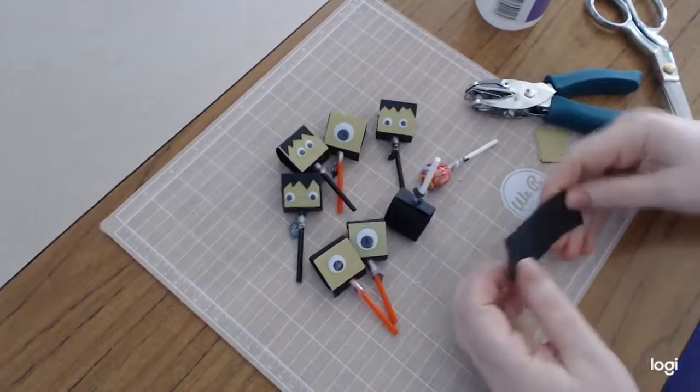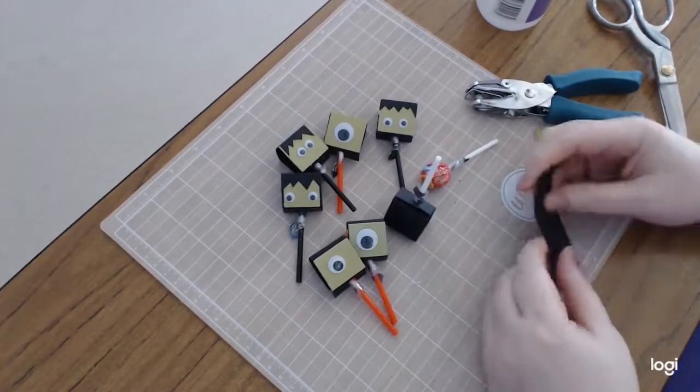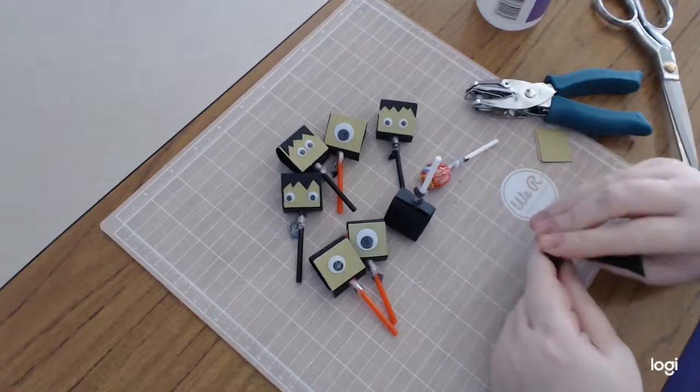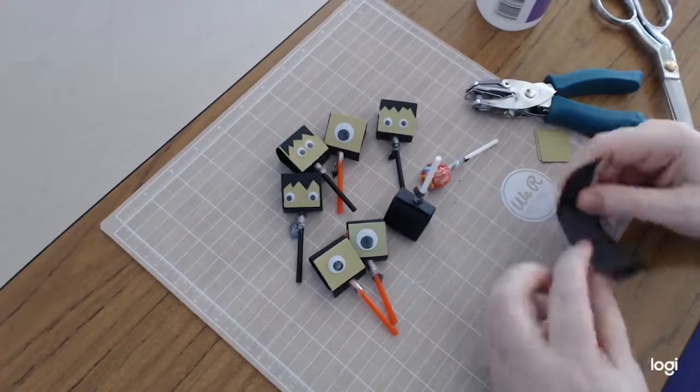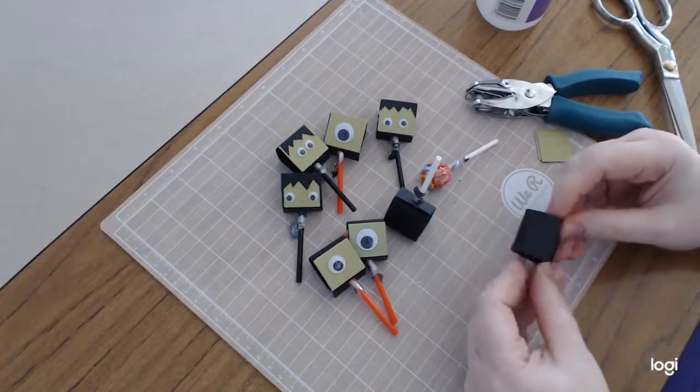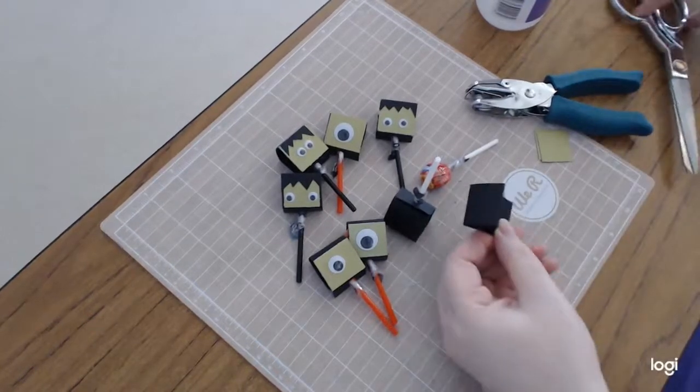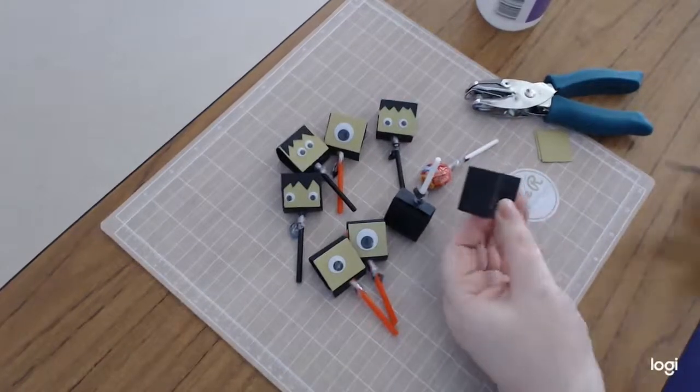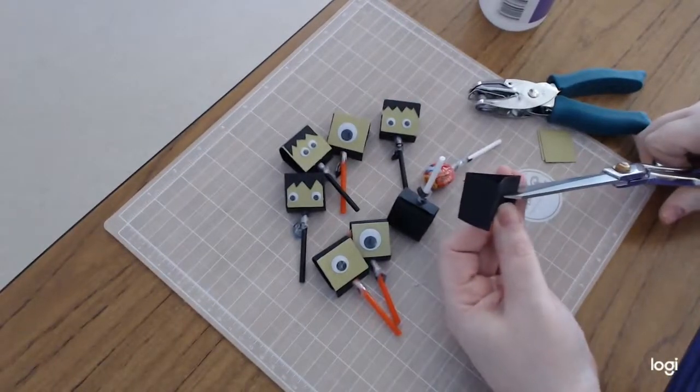But if you don't have the hole punch or you can't be bothered doing that, there is a really simple way of doing this. So what you're going to do is find approximately the middle of this. You're going to take your scissors—sorry for using the huge scissors everyone.